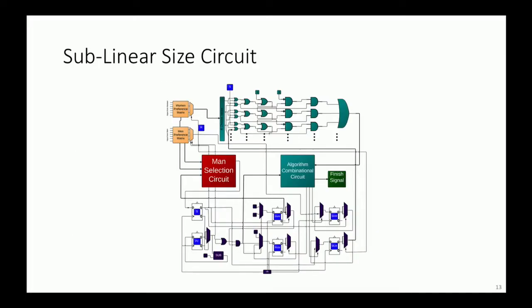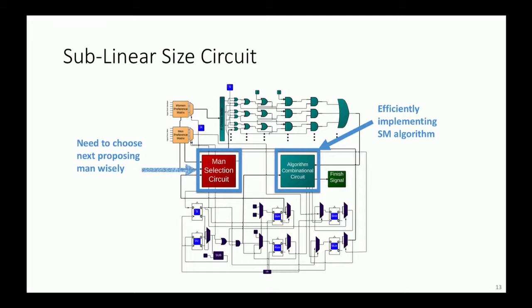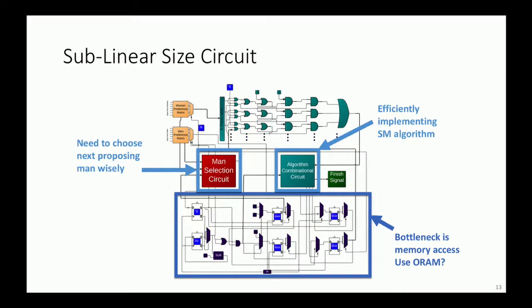This is the schematic view of our sublinear size circuit. The sublinearity is with respect to the number of participants in each group. I'll describe each building block in more detail. So this submodule acts as a control flow of the whole circuit and it basically implements the majority of the code in the stable matching algorithm. This circuit finds the free man in the previous Gale-Shapley cycle and feeds it to the algorithm. This part of the circuit is memory which can be implemented either as MUX or ORAM.